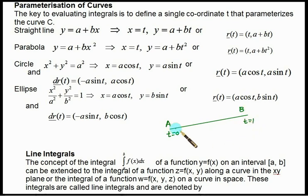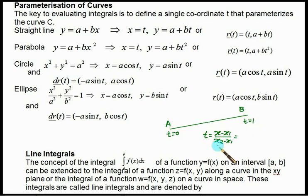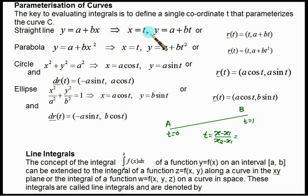For a straight line in 3D space: t is equal to (x minus x1) upon (x2 minus x1). The same can be repeated for y: (y minus y1) upon (y2 minus y1), and z: (z minus z1) upon (z2 minus z1). You can use this to find the values of x, y, and z in terms of t if you are given point a and point b. Recall that your limit is always from 0 to 1.